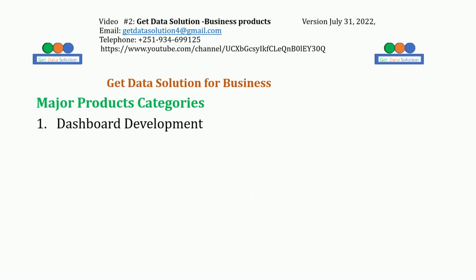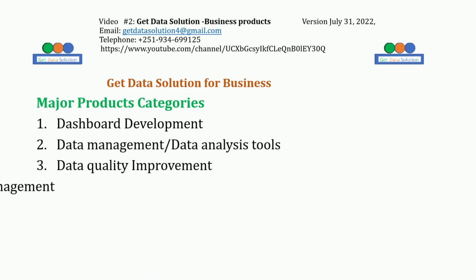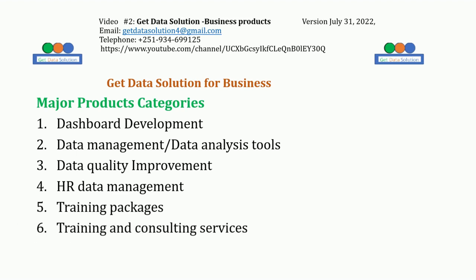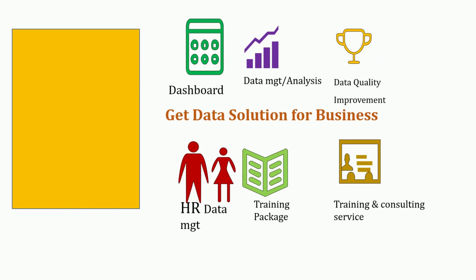These are the Major Product Categories which I have discussed in the previous slide. If you are interested in those Major Product Categories and Detail Products, you can find most of our products here. In this page, you can see the Major Categories of our product and icons representing them: Dashboard, Data Management, Data Quality Improvement, HR Data Management, Training Package, and Training and Consulting Services.